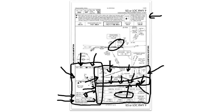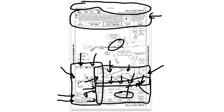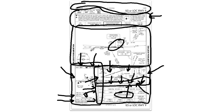And there you have the six major sections of the approach chart: marginal data, pilot briefing, plan view, profile view, minima, and airport diagram. We'll discuss all of these in more detail in other lessons. That's it for an overview of the IFR approach chart. Please join us for our next class on the pilot briefing section of an approach chart.